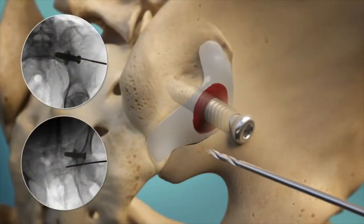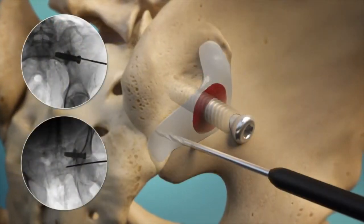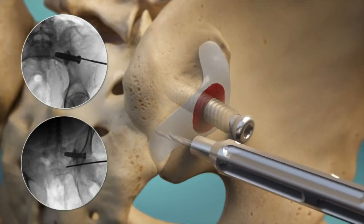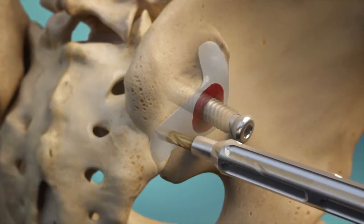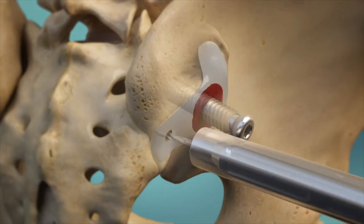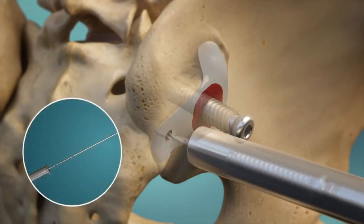A second implant provides additional stabilization by preventing joint rotation. A safe trajectory is once again established using the guide pin, and a new access channel is created through which the implant can be placed. After determining the length, the second implant is delivered and securely tightened to complete the fixation construct.